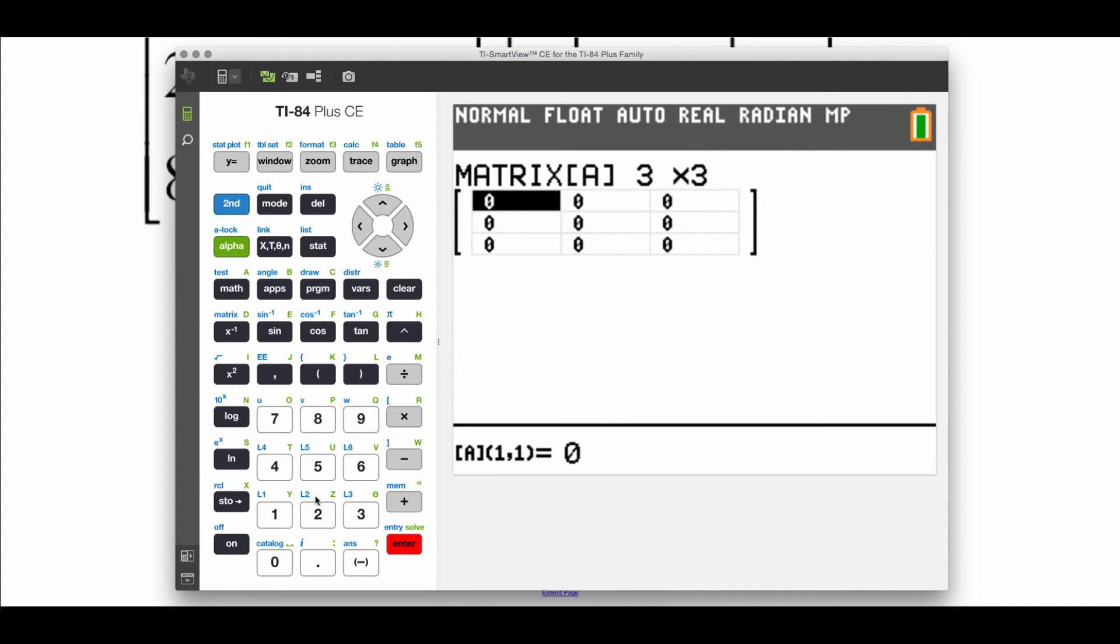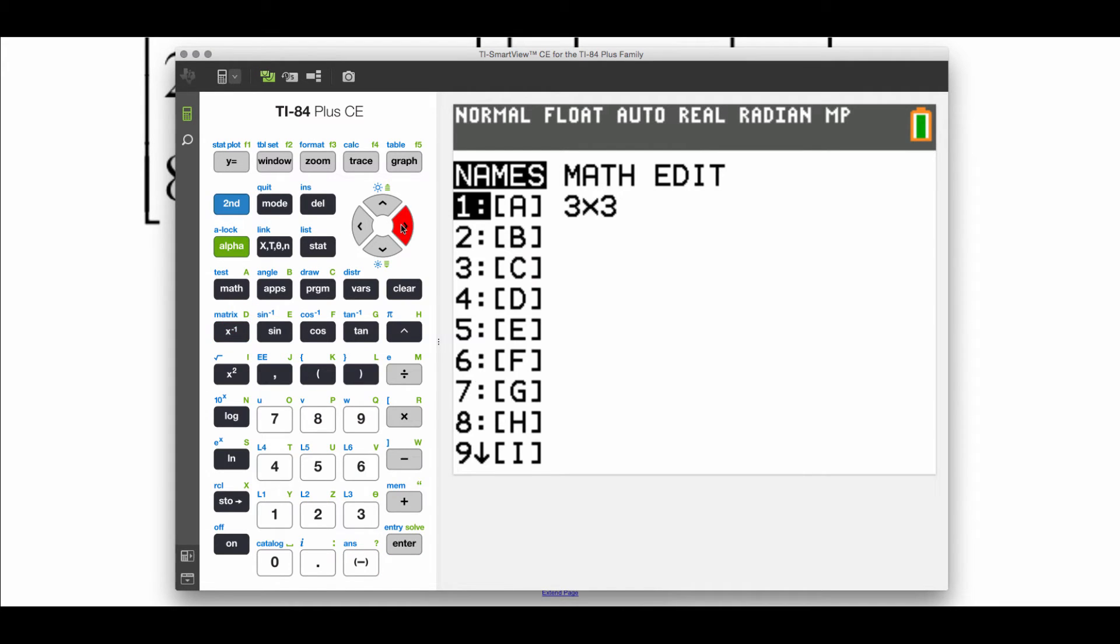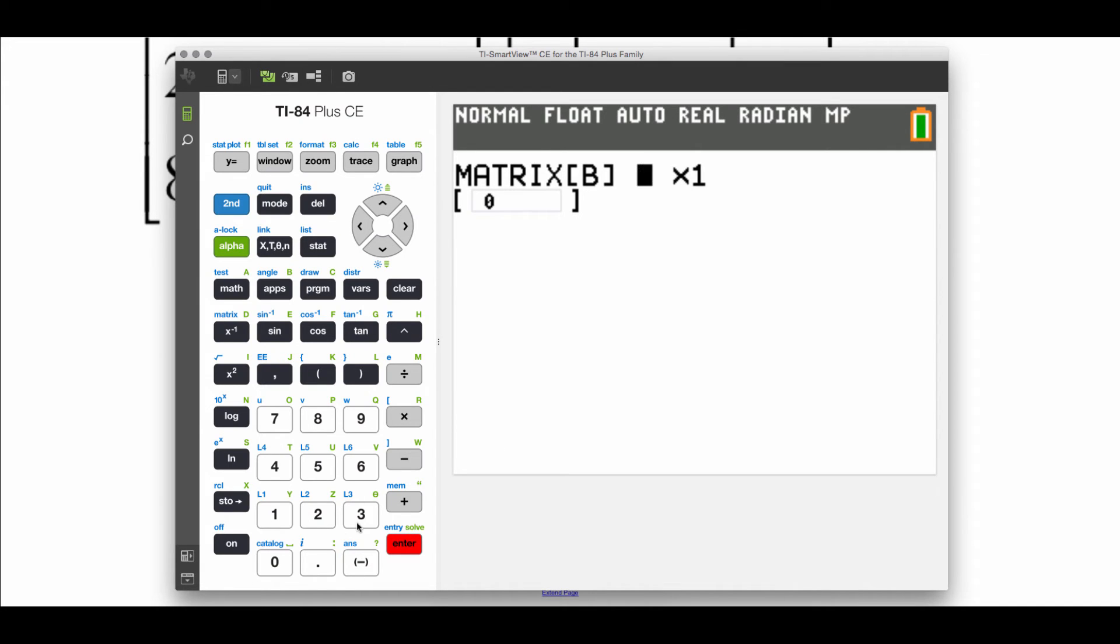And we've got entries four, negative two, three, two, two, five, eight, negative five, negative two, and then we've got this other matrix B, so we'll go to edit matrix B, and this one was a three by one matrix with entries negative two, sixteen, and four.